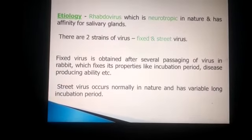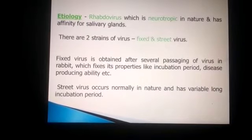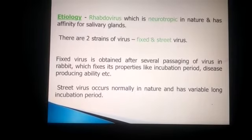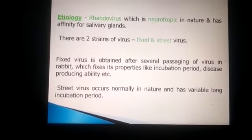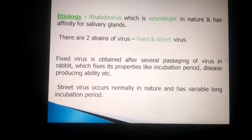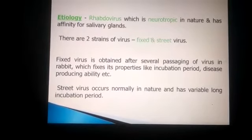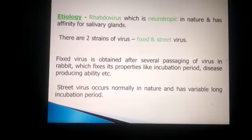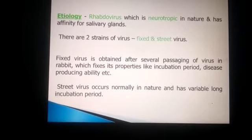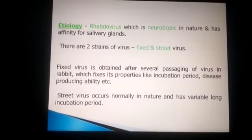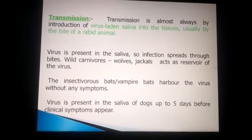The fixed strain has fixed clinical symptoms and is obtained in the laboratory through serial passage of the virus in rabbits. The street strain is what is normally found in the environment. The fixed strain has defined properties like incubation period and disease production capacity, whereas the street strain occurs normally in nature and has a variable, long incubation period.